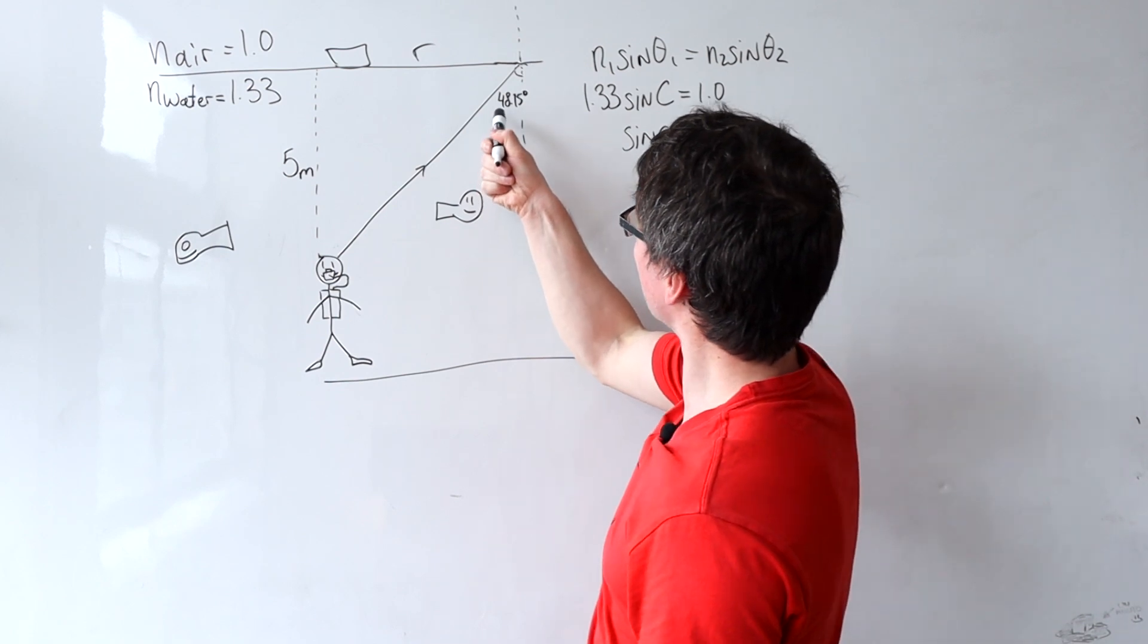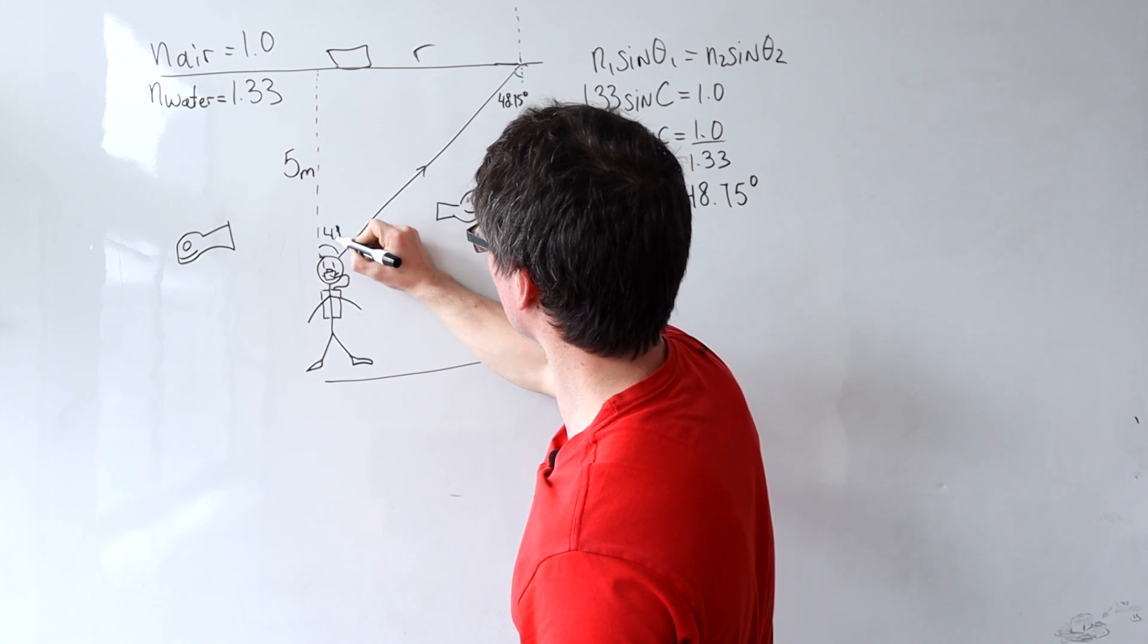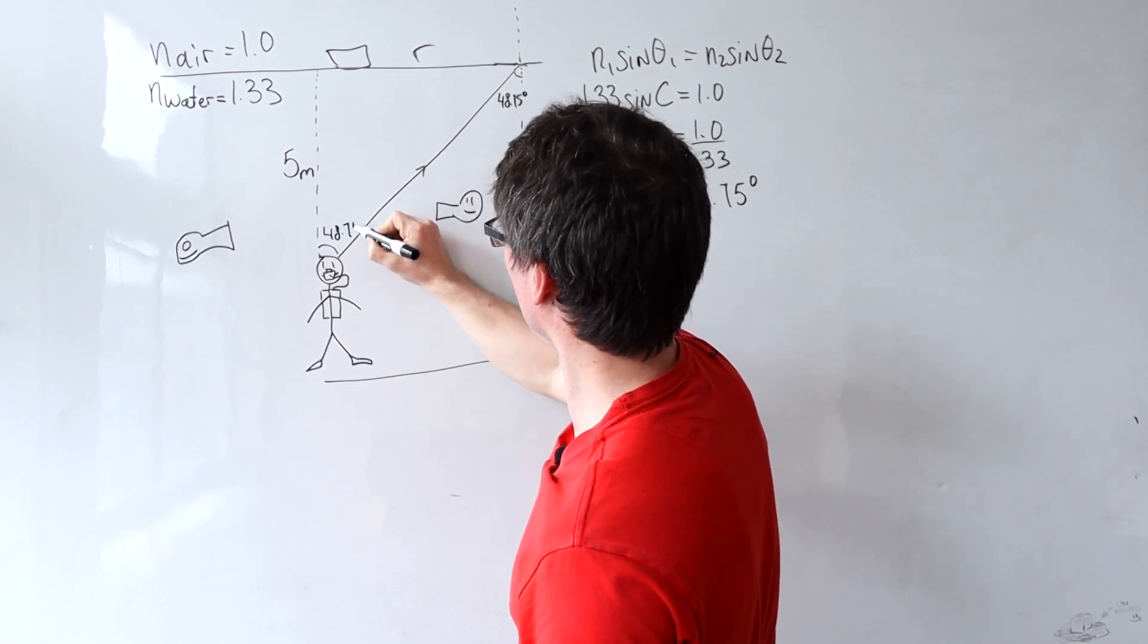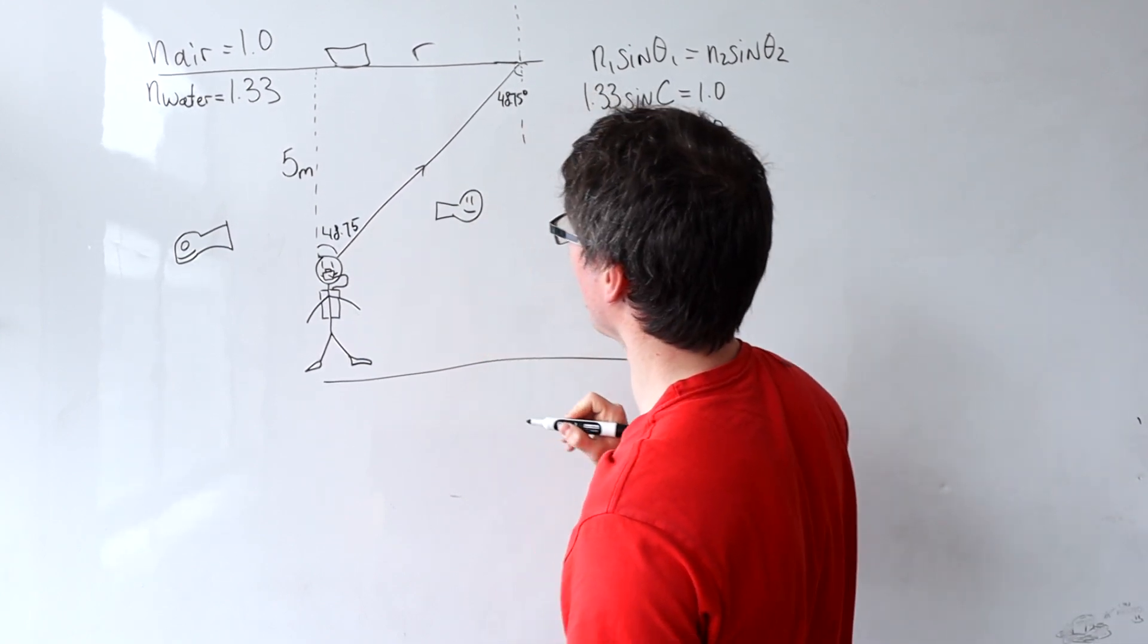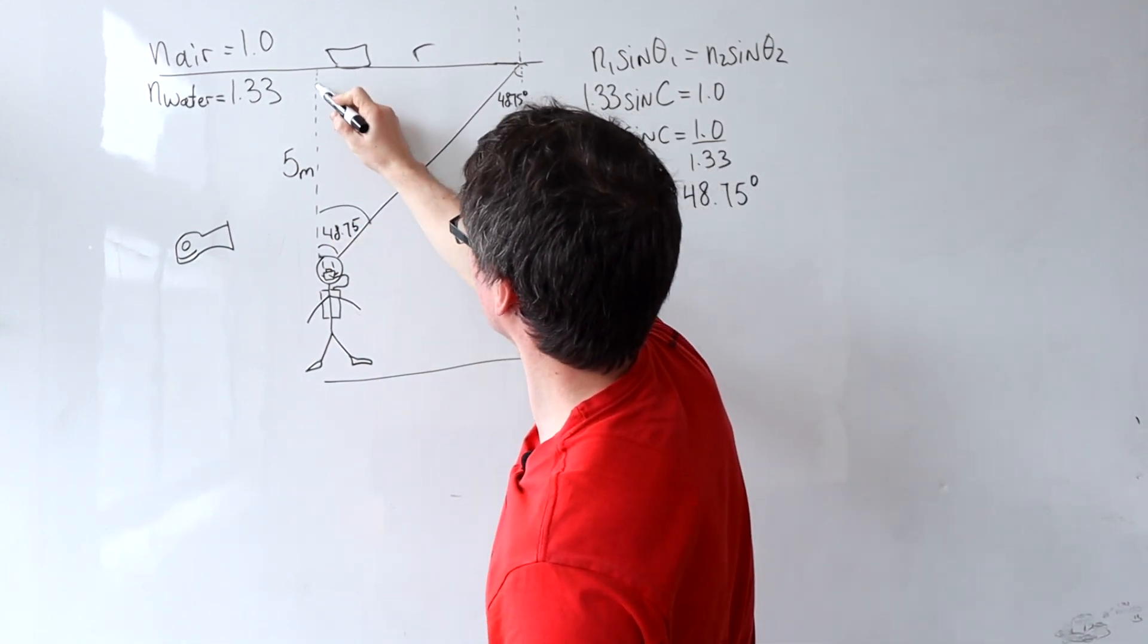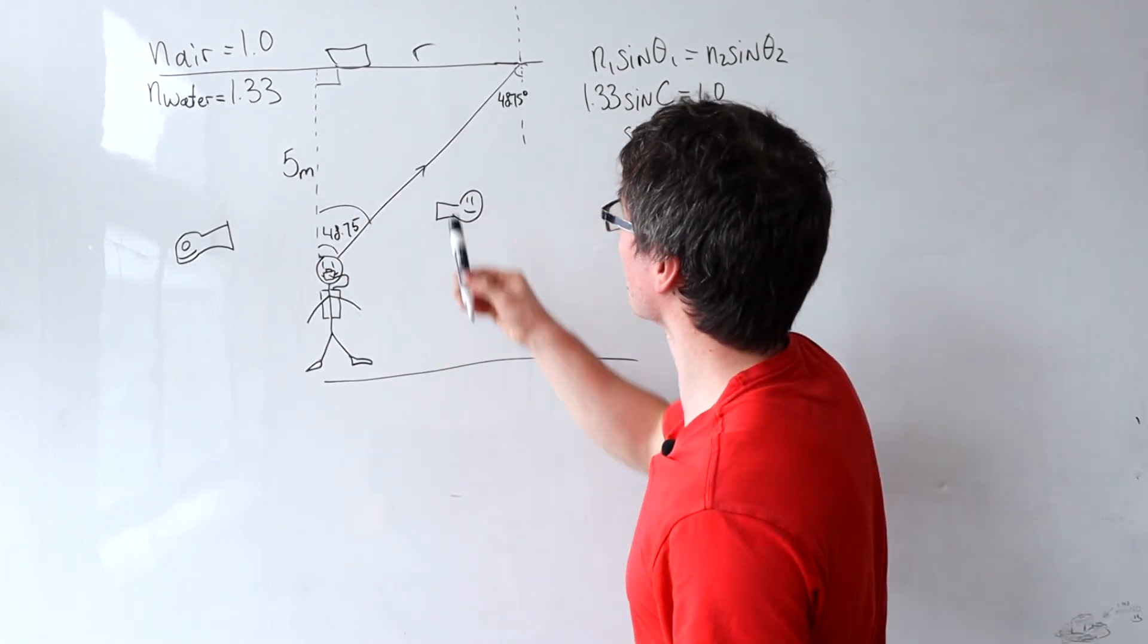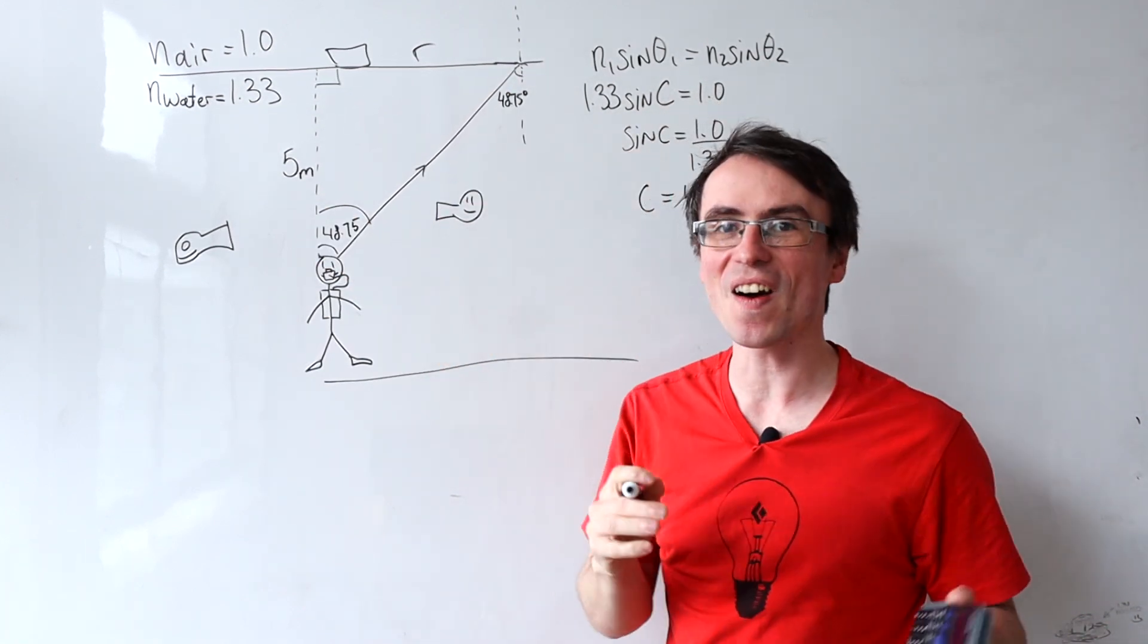By using Z angles, I can say that this angle here will also be 48.75. This angle here is 90 degrees, this distance here is 5 meters, and this distance is R.